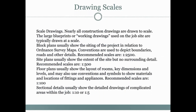Conventions are used to depict boundaries, roads, and other details. The recommended scale for block plans is 1 to 2,500. Site plans usually show the extent of the site but not surrounding details — a site plan is just a plan of the site, with a recommended scale of 1 to 500. Floor plans usually show the layout of the rooms, key dimensions, and levels. Many also use conventions and symbols to show materials and locations of fittings and appliances. The recommended scale for floor plans is 1 to 100.